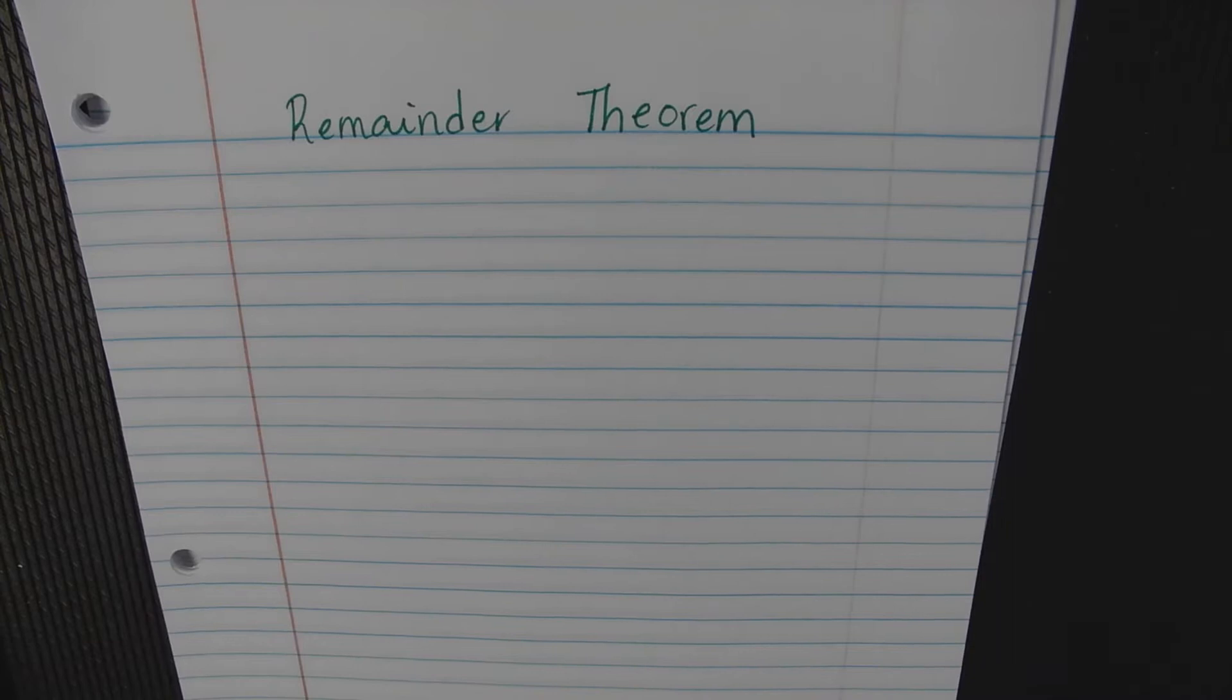All right, so this is called the Remainder Theorem. Basically, what we did yesterday - synthetic division - can be used to find the value of a function. Specifically, do you remember from Algebra 1, given like f of 2, where you put 2 back in for x? Does that ring a bell?